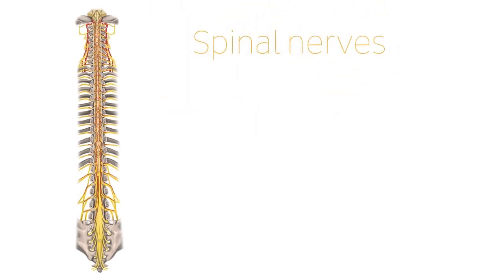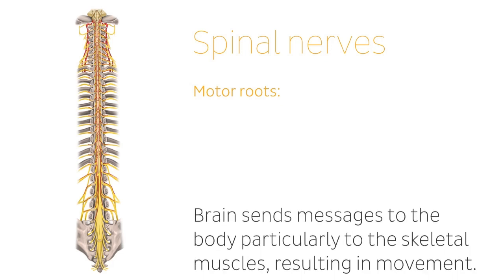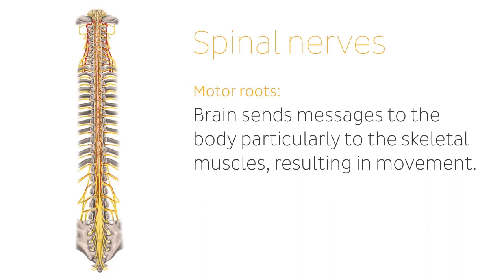Spinal nerves branch out of the spaces between the vertebrae and the spinal cord. The motor roots emerge from the ventral root, the anterior aspect of the spinal column, and from them the brain sends messages to the body, particularly to the skeletal muscles, resulting in movement.